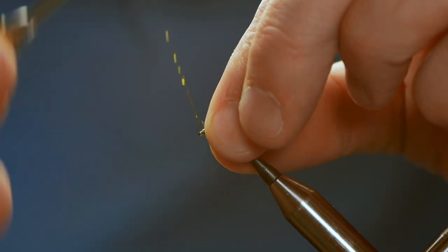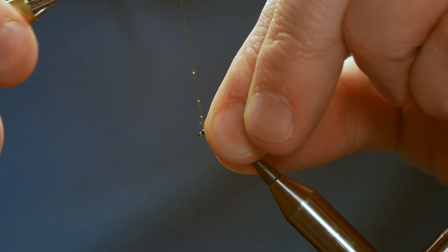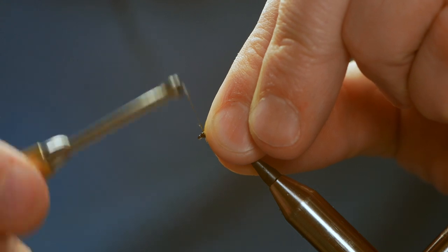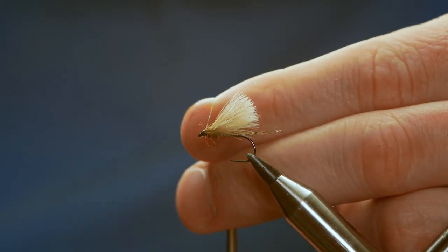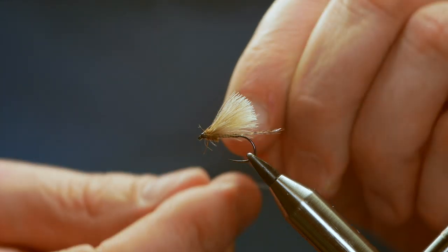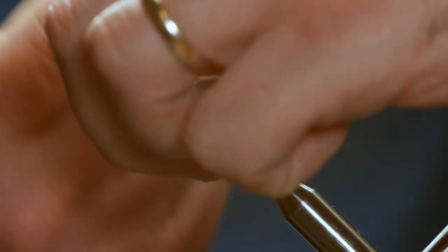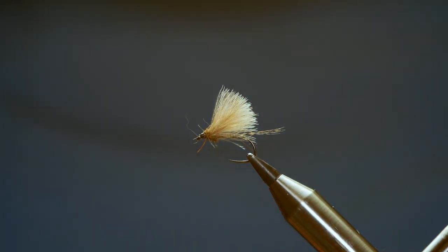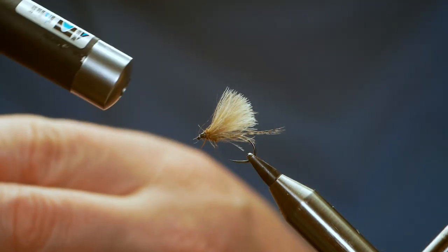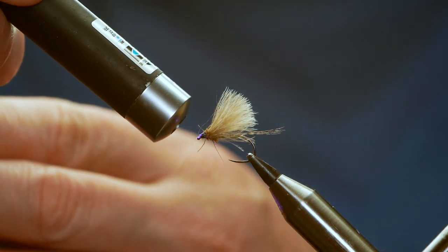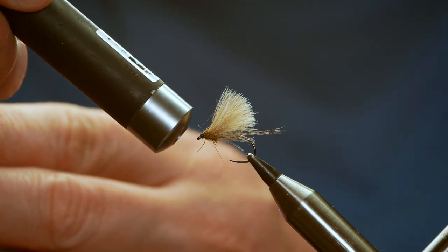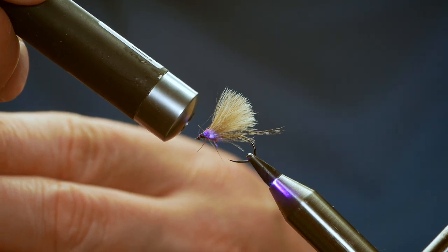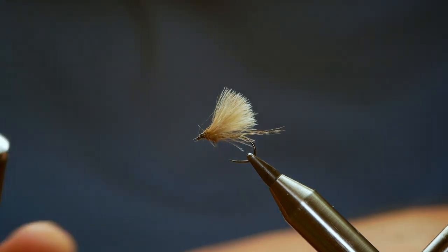Slick everything back out of the way and then just build your head. Then with a whip finish tool, if you've got one, you can whip finish. I'm using the old half hitch method and once that's done, you can then cure your head. No need to varnish now because you've buried your thread inside the head and cured off the UV resin.